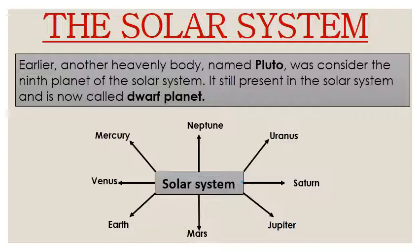Solar system mein total 8 planets hain: Mercury, Venus, Earth, Mars, Jupiter, Saturn, Uranus and Neptune. These all are the 8 planets which are present in the solar system. In 8 planets ke milne se solar system banta hai.